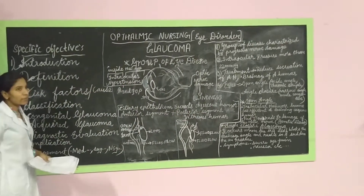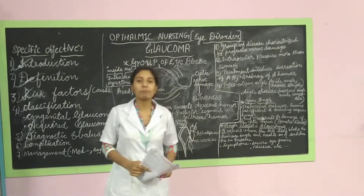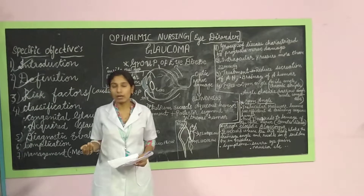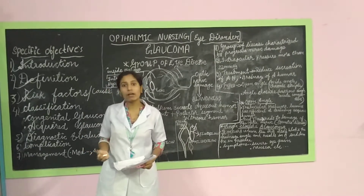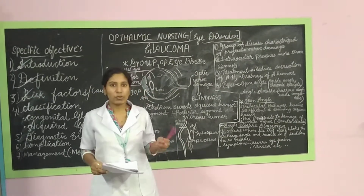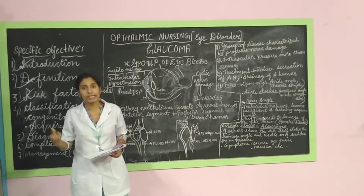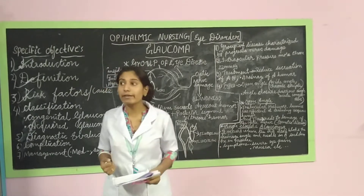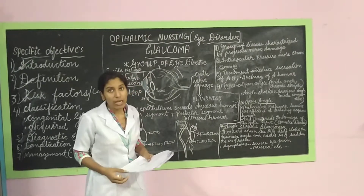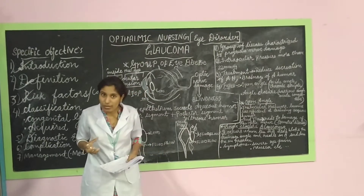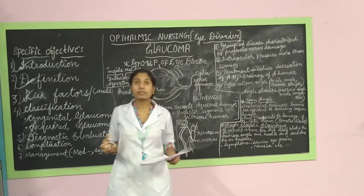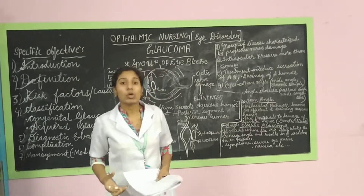Now we will see the risk factors of Glaucoma. The risk factors include: aging — people above 50 years have more chances of getting Glaucoma. Genetic disorders, hypertension, and diabetes mellitus are also risk factors. Eye trauma, ocular surgery, skin pigmentation, emotional excitement, and pupil dilation are also risk factors of Glaucoma.